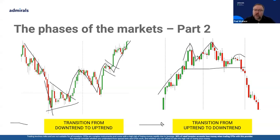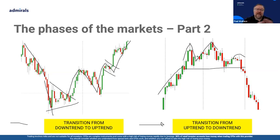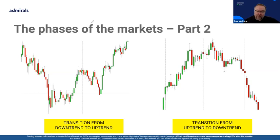So those are the five phases: uptrend, range-bound, downtrend, transitioning from downtrend to uptrend, and transitioning from uptrend to downtrend. Even as a new trader, if you can identify which phase the market is in, that gives you a good starting point. As a trader you're really only making one of three decisions: am I going to be a buyer, am I going to be a seller, or am I going to sit on my hands and do nothing? Sitting on your hands and doing nothing is actually what you might do more often than anything else — and that is absolutely fine.